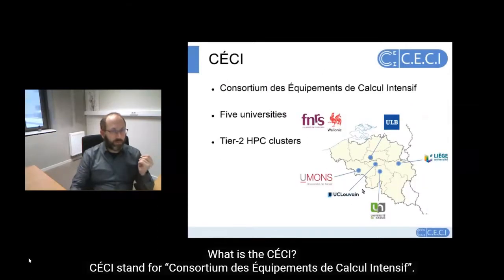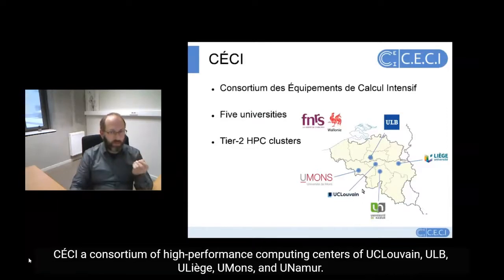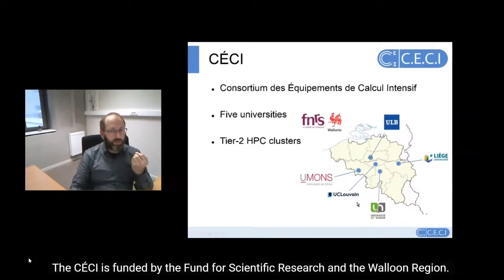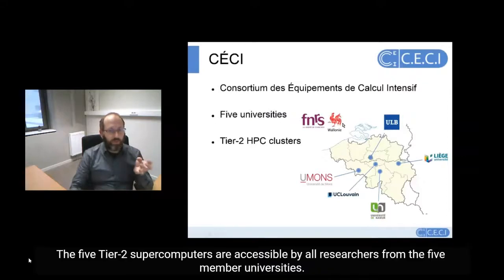What is CECI? CECI stands for Consortium des Équipements de Calcul Intensif. CECI is a consortium of High Performance Computing centers of UCLouvain, ULB, ULiège, UMONS, and UNamur. The CECI is funded by the Fund for Scientific Research as well as the Walloon Region. The five Tier 2 supercomputers are accessible by all researchers from the five member universities.